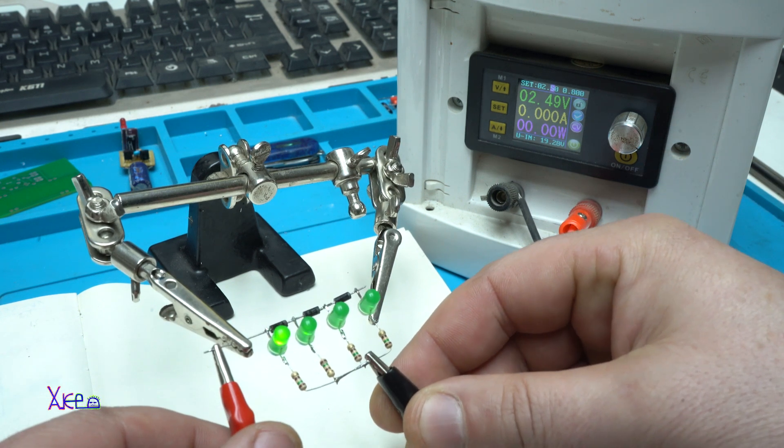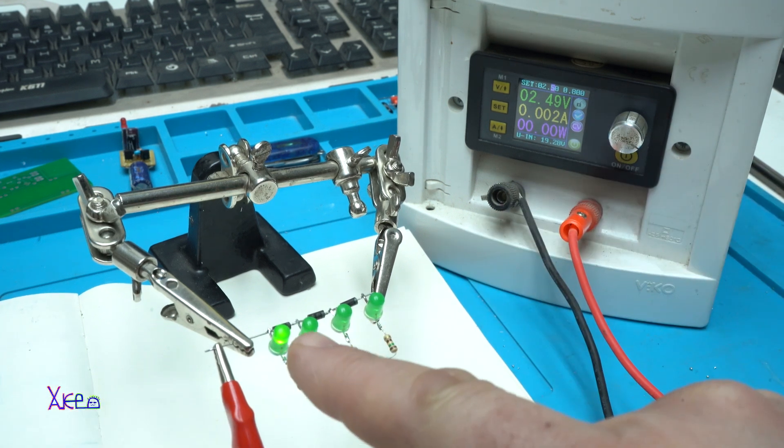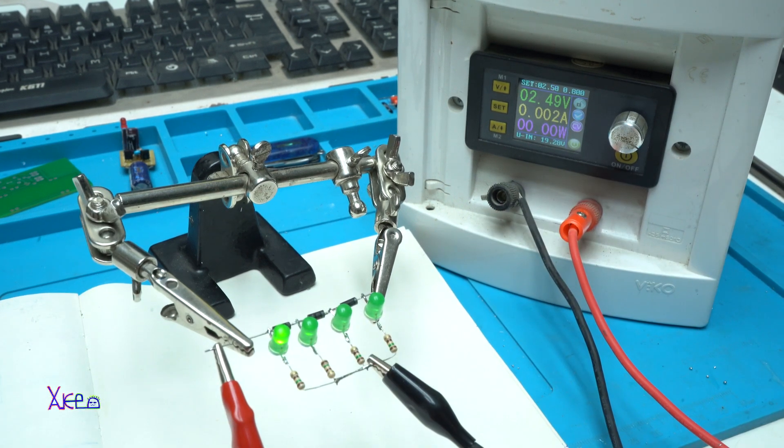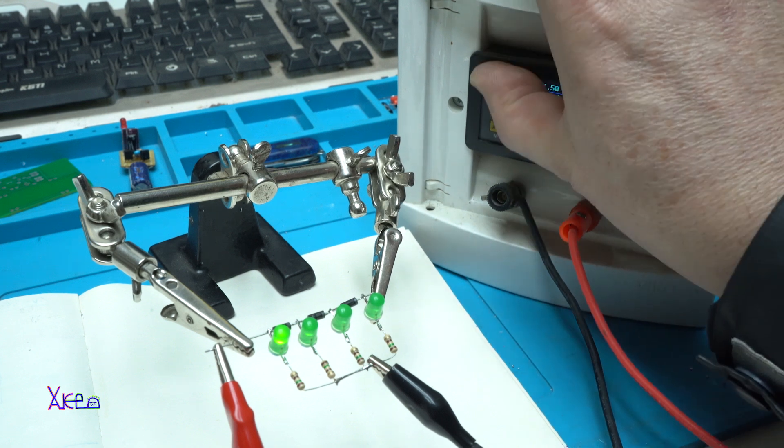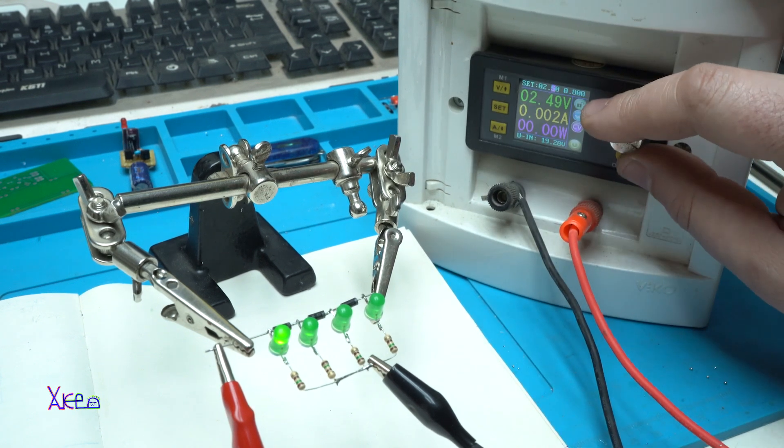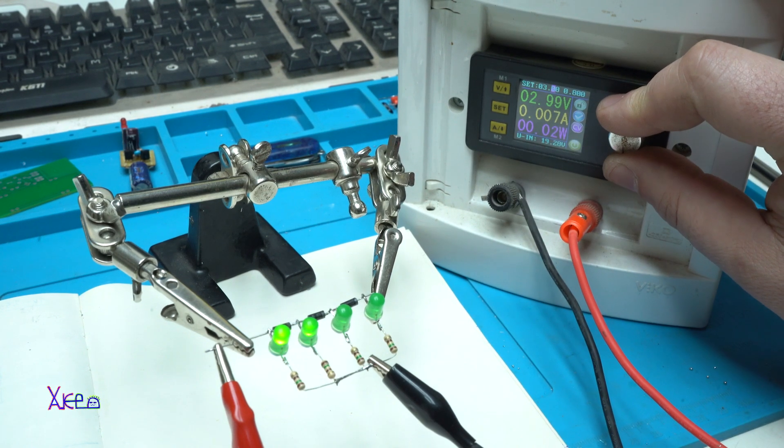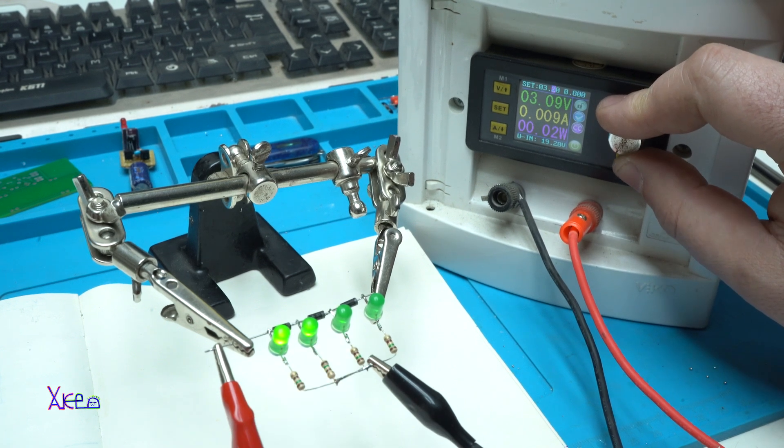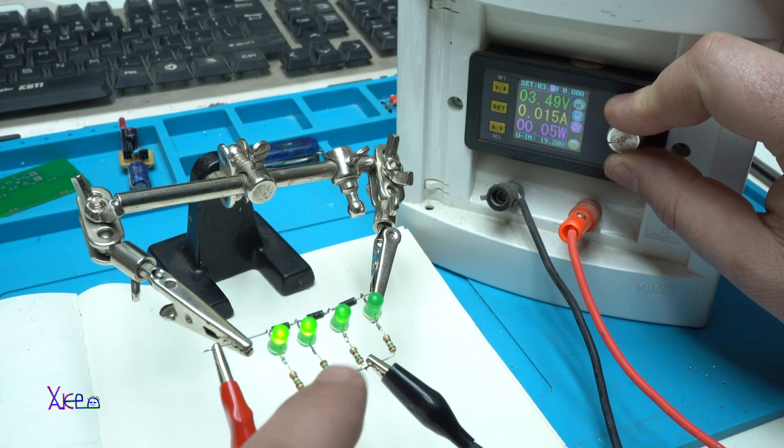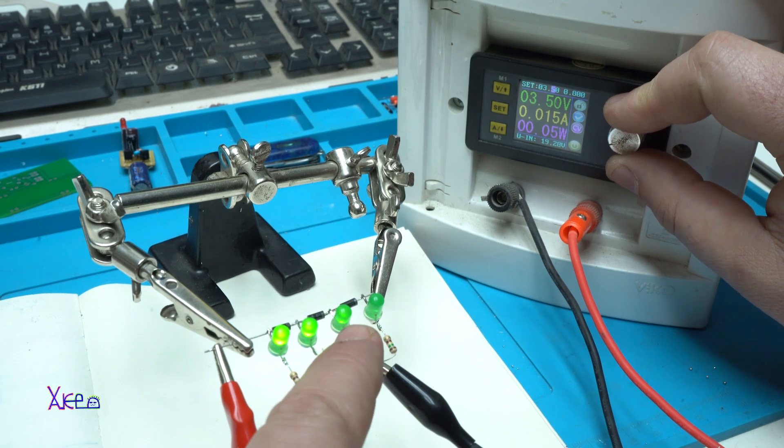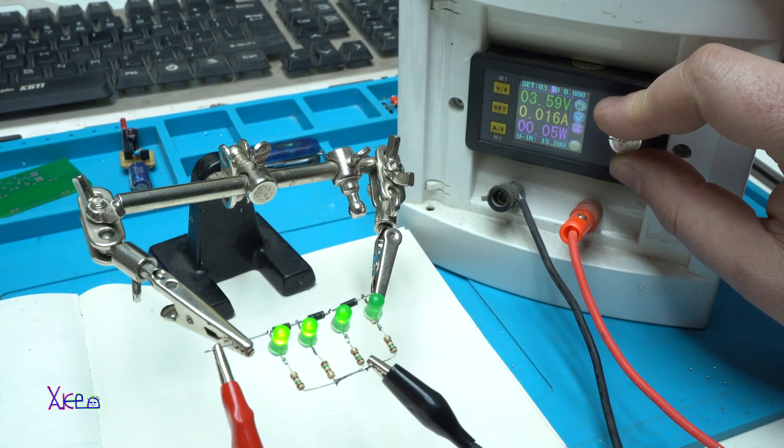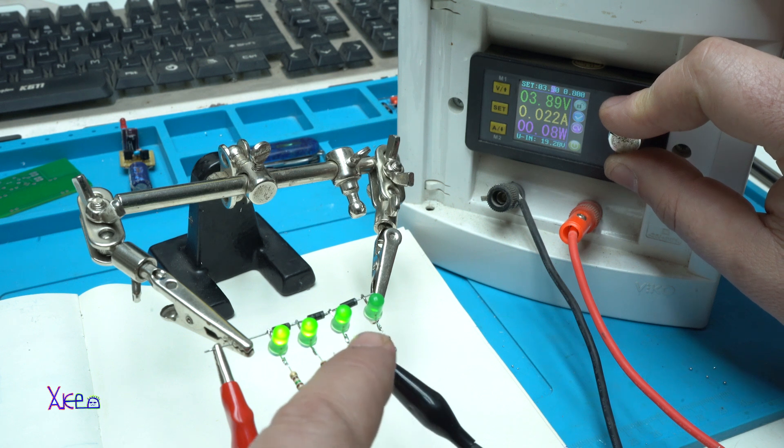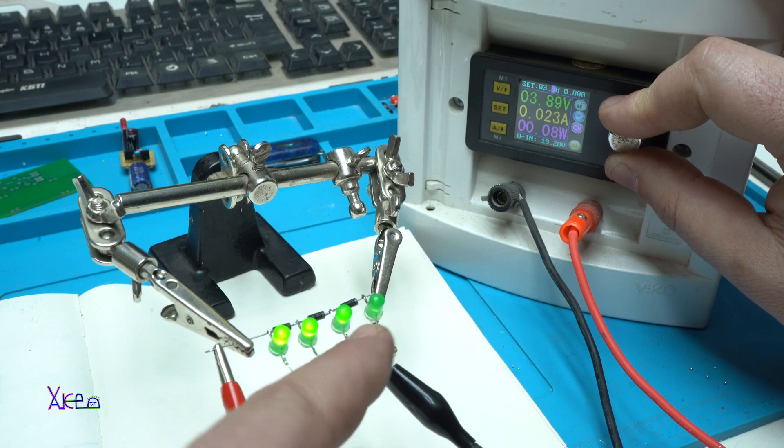Yes, we have the first LED turn on. Now I'm gonna increase the voltage. The second one detects three volts. 3.5 volts at the third one and now the fourth is a little bit glowing. At 4.2 volts,